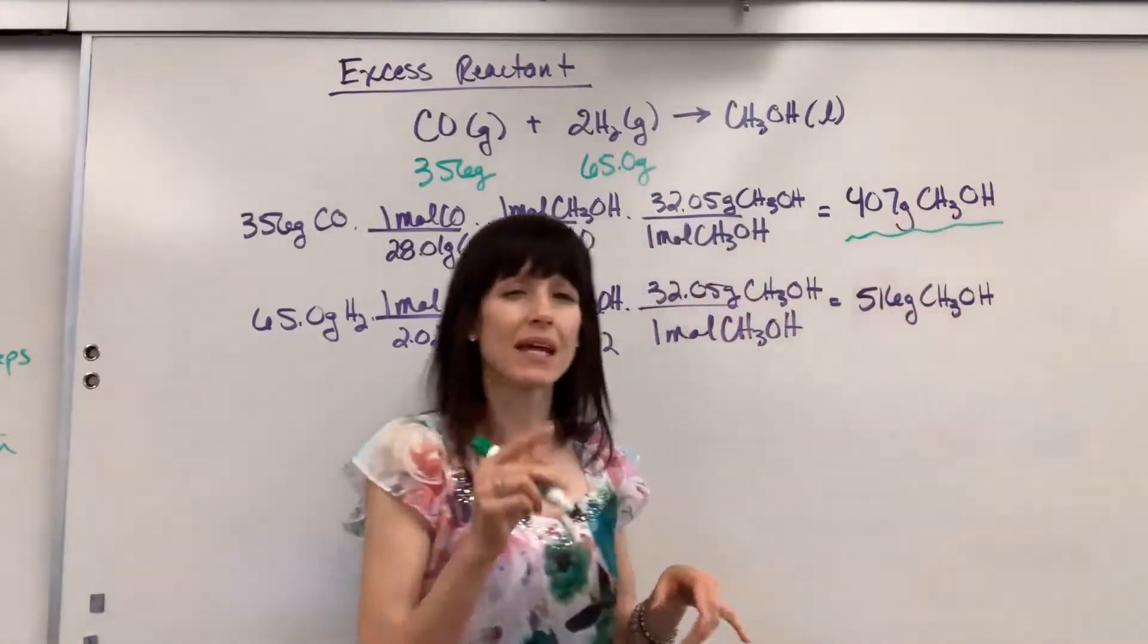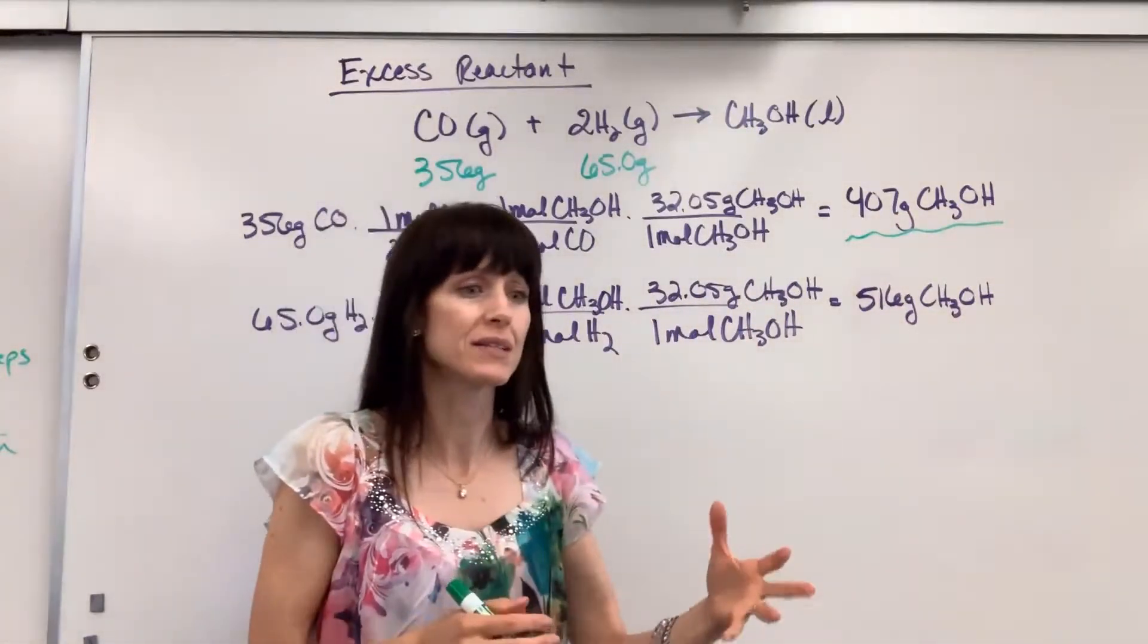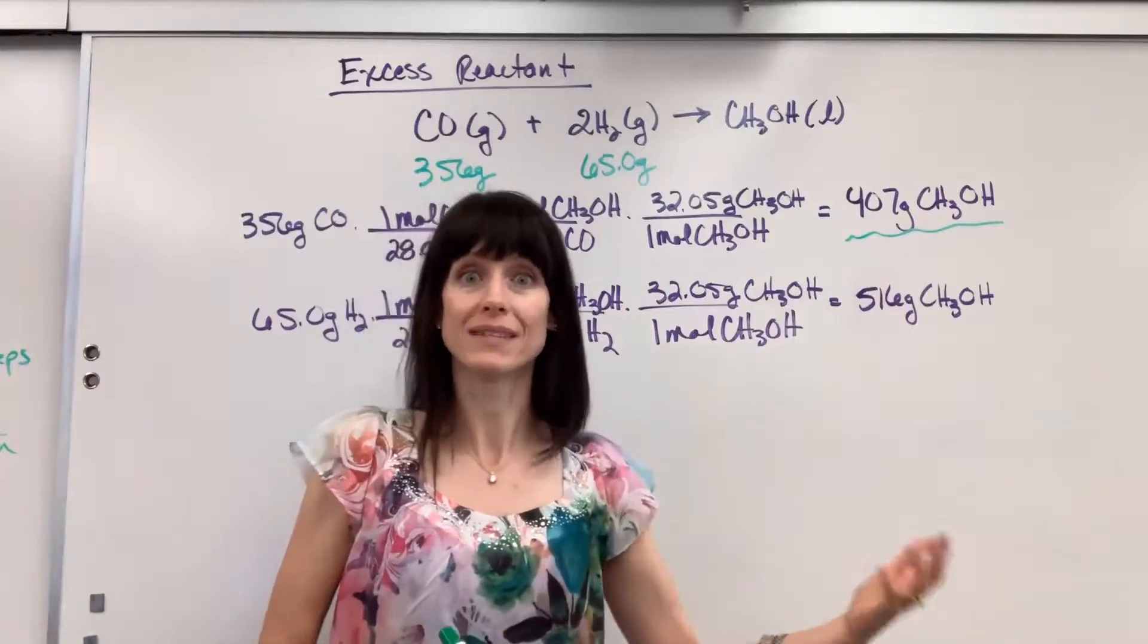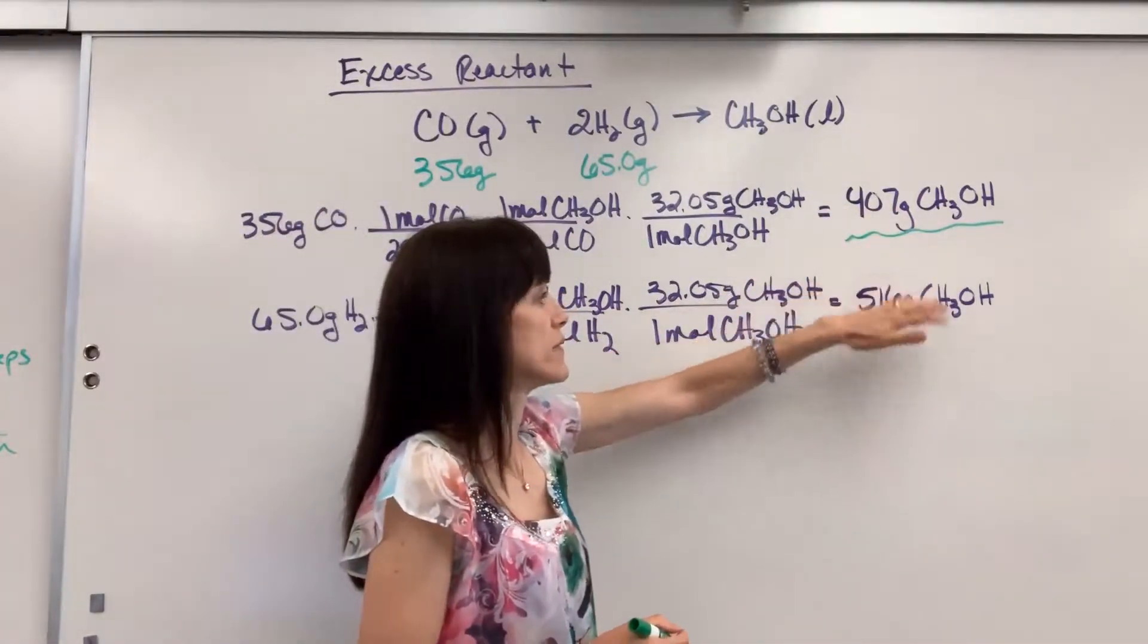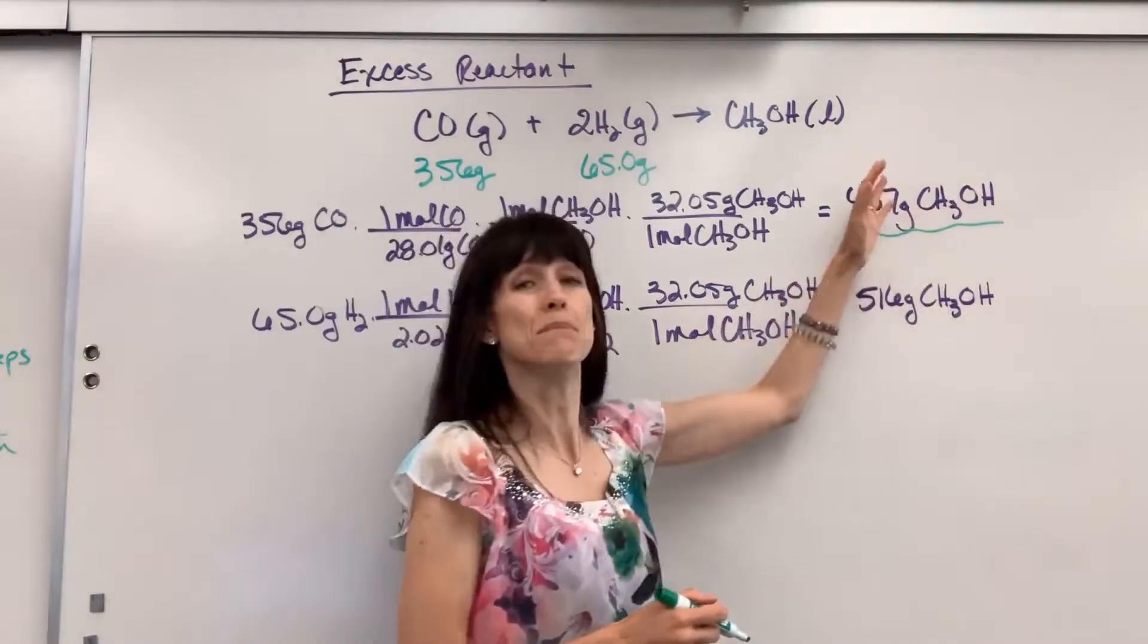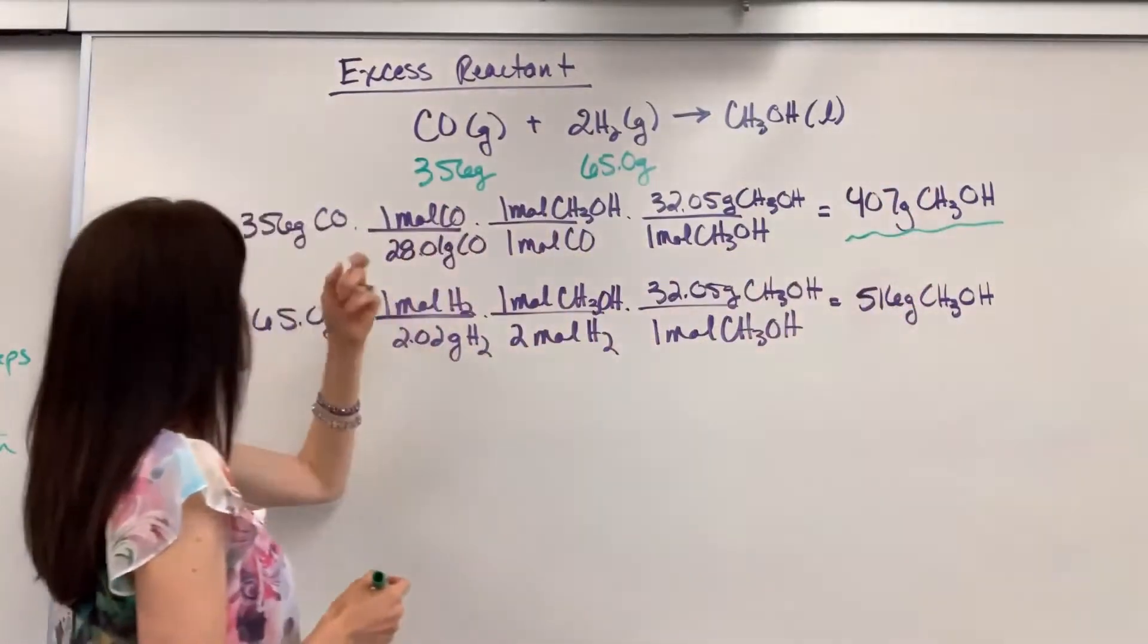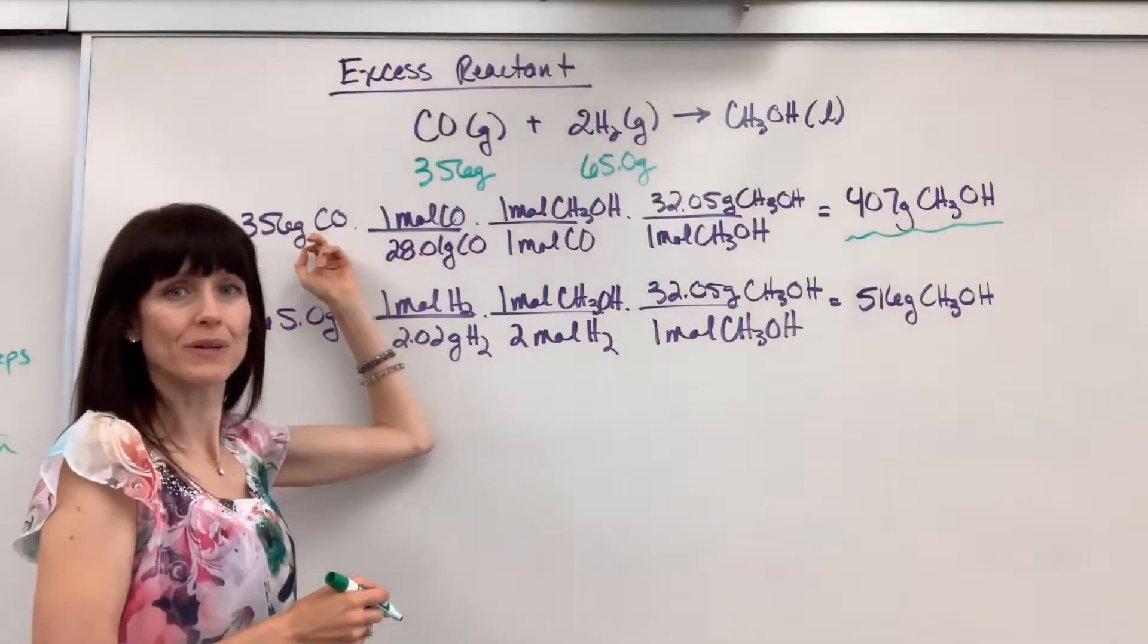You can't make any more than the smallest amount. I can't make any more cookies than the ingredient that runs out first. So this right here, 407 is smaller than 516. That's the maximum that I can make. And that count came from the carbon monoxide.